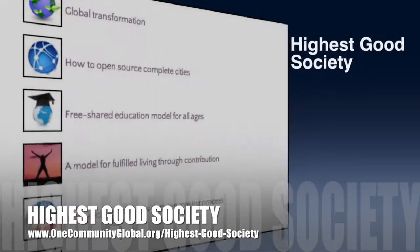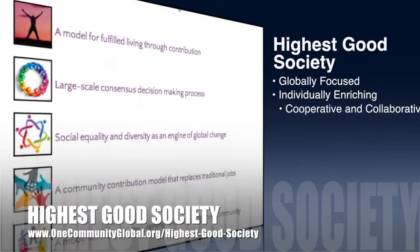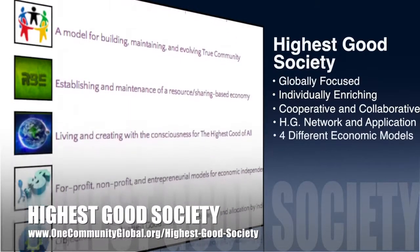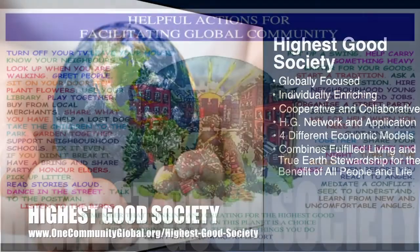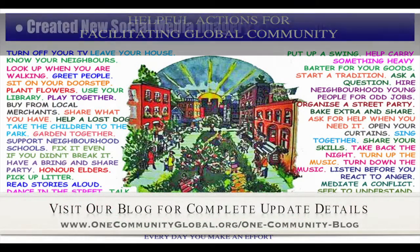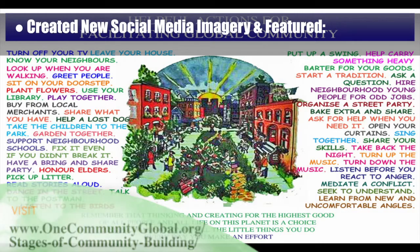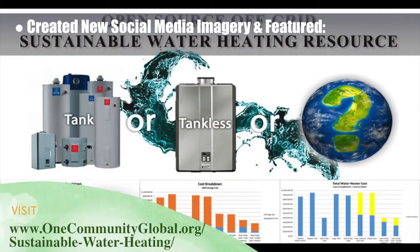OneCommunity's approach to Highest Good Society is globally focused, individually enriching, cooperative and collaborative, includes a Highest Good network and application, four different economic models, and combines fulfilled living and true earth stewardship for the benefit of all people and all life on this planet. This week, the core team created new social media imagery and updated and featured our phases of community building page. This page teaches the four phases of community building from Dr. M. Scott Peck's book, The Different Drum: Community Making and Peace. We also updated our open source sustainable water heating page, which shares all of our research into comparing different options for water heating in remote off-grid situations.